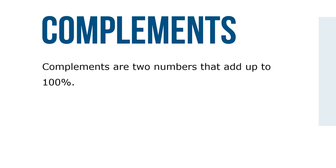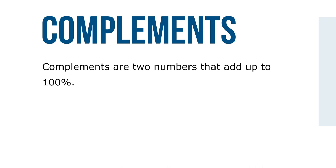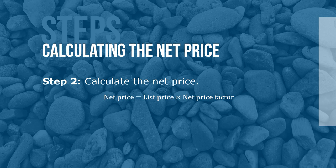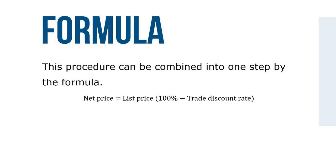Complements are two numbers that add up to 100%. The trade discount rate and the net price factor are complements of each other, meaning that if we know one of them, the other can be found by subtracting from 100%. To calculate the net price: Step 1, calculate the net price factor — net price factor equals 100% minus the trade discount rate. Step 2, calculate the net price using the formula: net price equals list price times the net price factor. This can be combined into one step: net price equals list price times (100% minus trade discount rate).